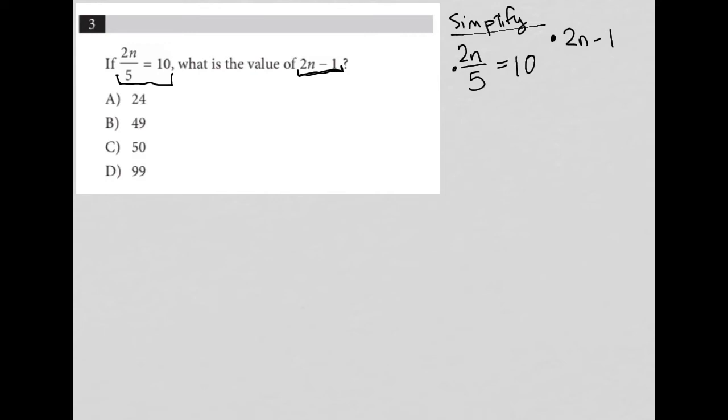Now, the truth is I can find the value of n. So if I multiply both sides by 5 here, that will give me 2n equals 50. I can then divide by 2 on both sides here, and I get n equals 25.